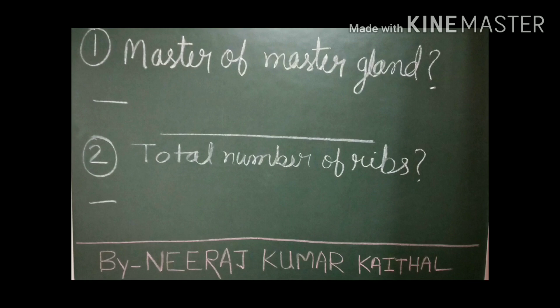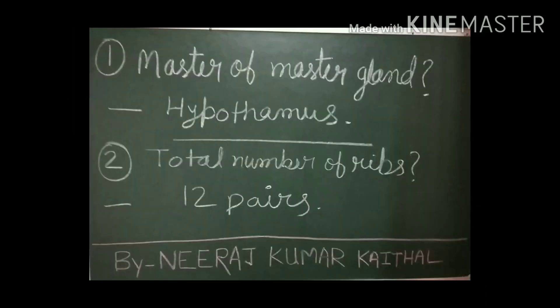Question number two: what is the total number of ribs present in our body? Hypothalamus is the gland that is known as master of master gland. In our body, total 12 pairs of ribs are present. All these ribs together form the rib cage. The main function of this rib cage is to protect the organs situated inside it.